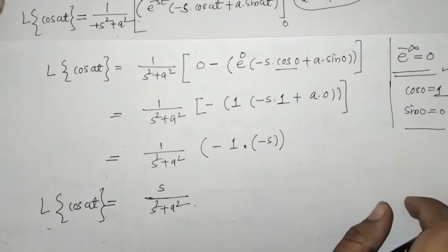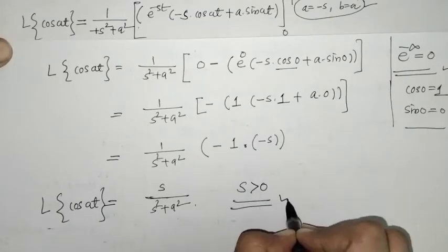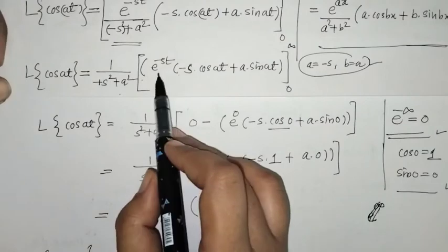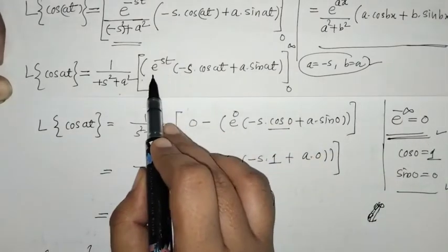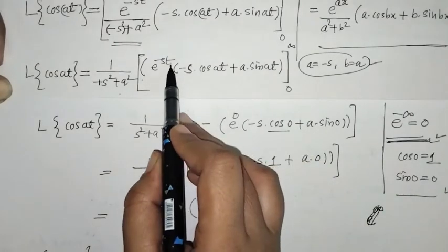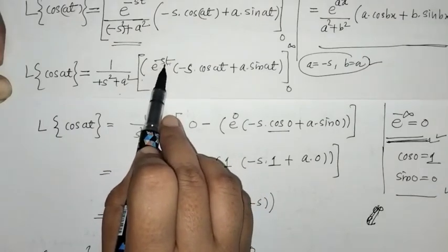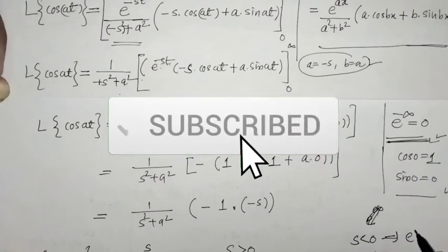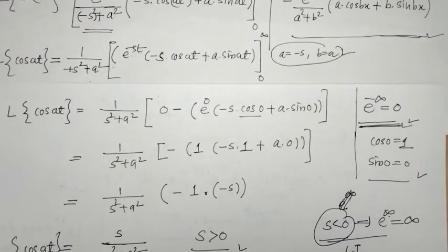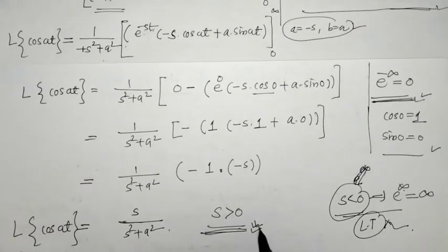We should also check the condition on s. Here s must be greater than 0. When s is greater than 0, e raised to minus infinity equals 0, which is valid. But when s is less than 0, the exponent becomes positive, giving e raised to plus infinity, which is infinity — so the Laplace transform is not well defined. Therefore, to get this Laplace transform, we must have s greater than 0.